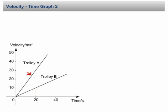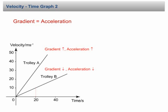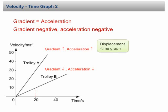If the gradient is negative, the acceleration is also negative. A negative acceleration can mean deceleration or acceleration in the negative direction. Note that a velocity-time graph is different from a displacement-time graph: in a displacement-time graph, the gradient equals velocity, whereas in a velocity-time graph, the gradient equals acceleration.